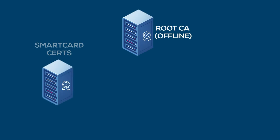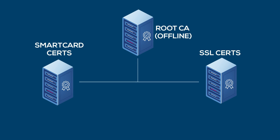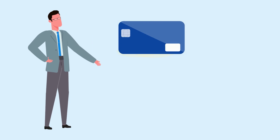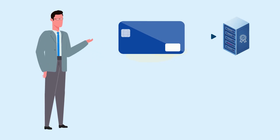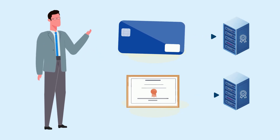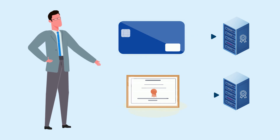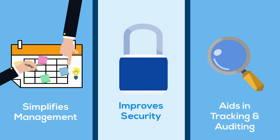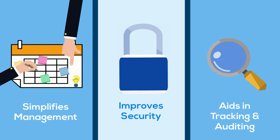While a singular root CA can be associated with several issuing CAs, best practices advocate for segmenting these issuing CAs based on the nature of the certificates they distribute. For example, if your organization is dealing with both smart card certificates and SSL certificates, it's wise to have separate issuing CAs for each. This delineation simplifies management, ensures better security, and aids in tracking and auditing.